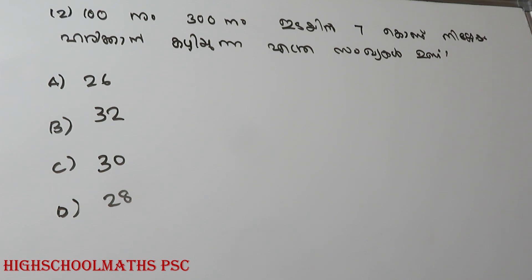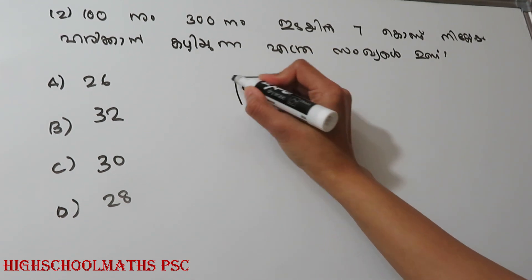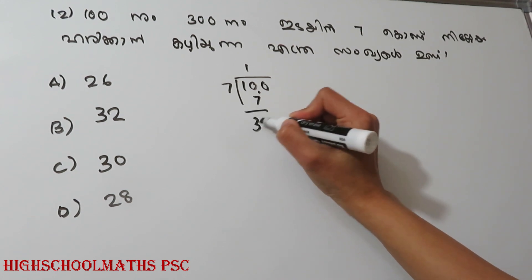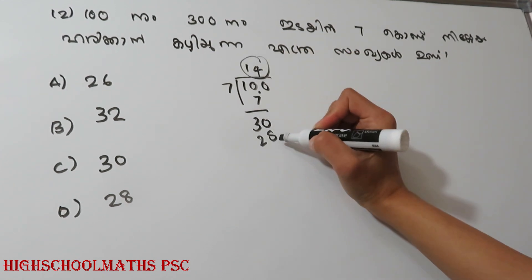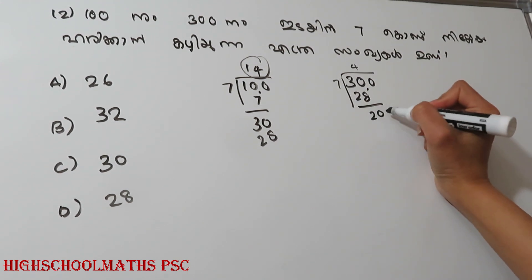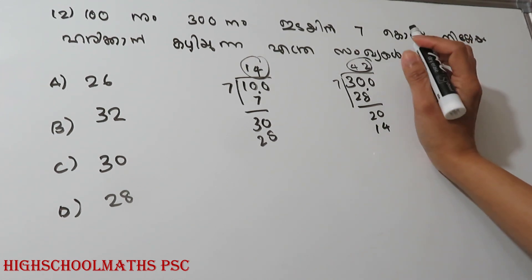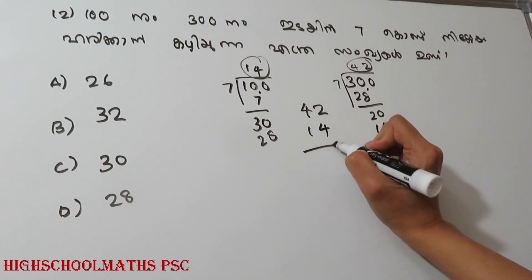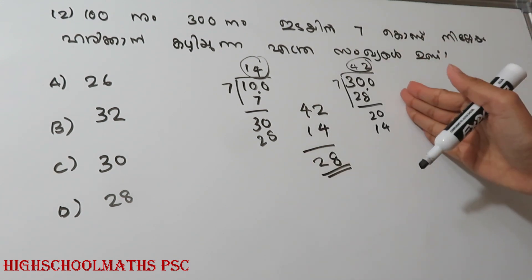Question number 12. How many natural numbers are there between 100 and 300 which are divisible by 7? From 100 to 300, dividing by 7: 7 times 14 is 98, 7 times 15 is 105. For 300, 7 times 42 is 294. So the count is 28.